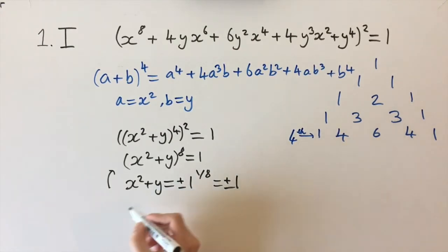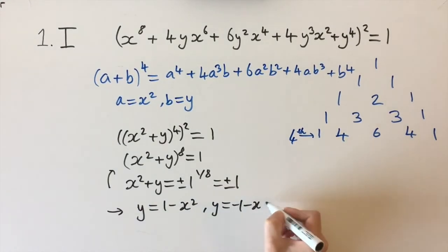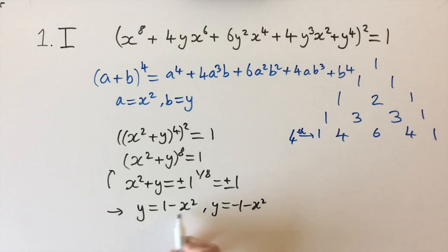We need to be careful of that because that gives us two solutions. That gives us y = 1 - x² and y = -1 - x². It's a nice little trick to get two quadratic functions out of this equation.